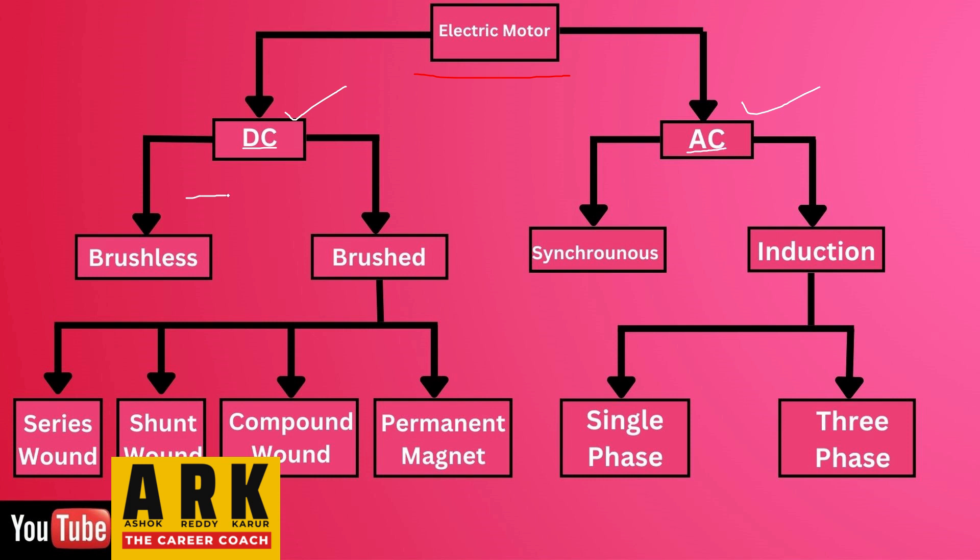In the direct current, the voltage will be same, so it will operate with the same voltage like this. But in the AC current, the voltage will be changing as per the speed. If you want to increase the speed, the voltage will increase. If you want to decrease the speed, the voltage will decrease like this.